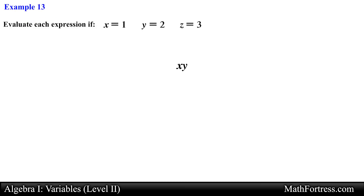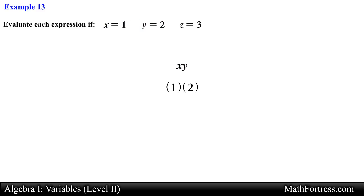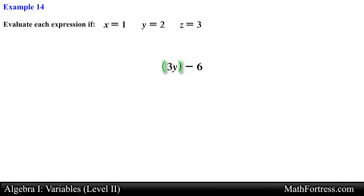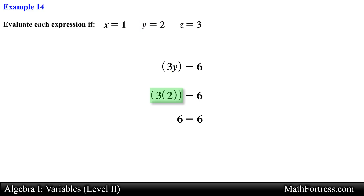Let's try the next variable expression: x times y. We substitute each variable — x equals 1 and y equals 2 — and simplify the expression, which equals 2. Next, 3y minus 6. Here notice we have parentheses, so we work on those expressions first. We substitute y with 2, giving us 3 times 2, which simplifies to 6, and then 6 minus 6 is equal to 0.